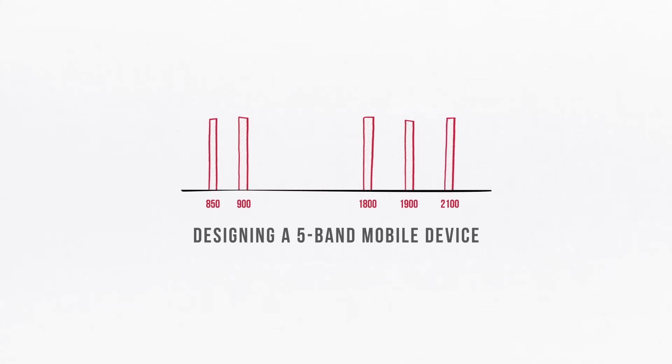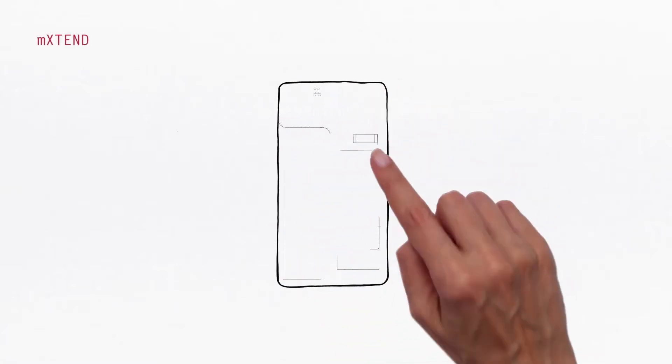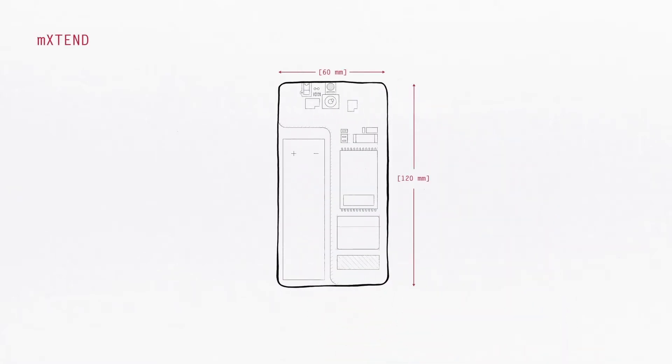Designing a 5-band mobile device. Here we are integrating a mobile Xtend antenna into a mobile device. Let's start by placing the antenna. Select the long side outer corner.